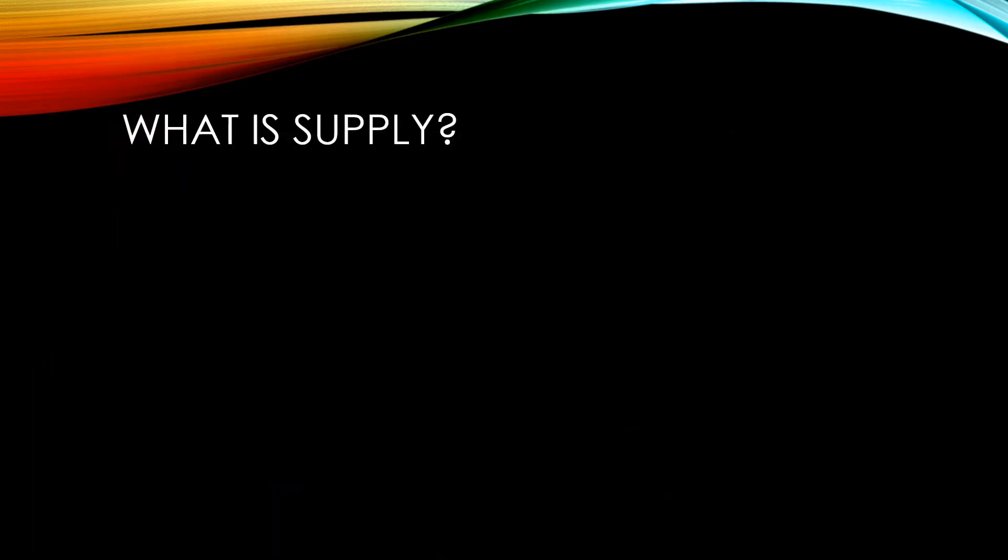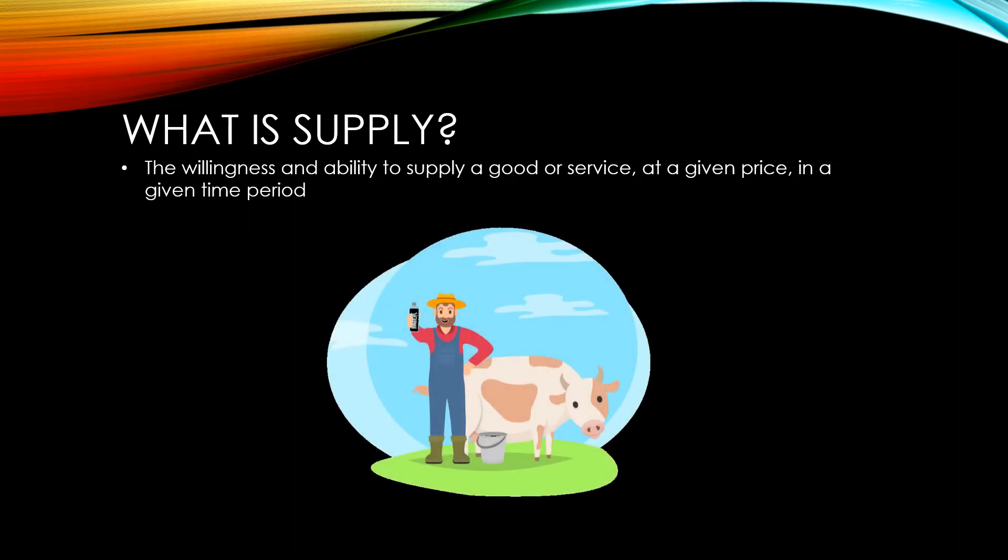Supply is the amount of a product that a supplier is both willing and able to supply at a given price in a given time period. A farmer with five cows might like to supply a thousand litres of milk per day but they would not be able to, so this would not be considered the amount of their supply.